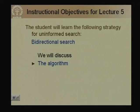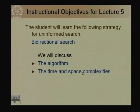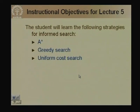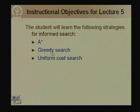In bidirectional search we will discuss the algorithm, the time and space complexities, and then we will move on to informed search. We will talk about the algorithm A* and before that we will talk about greedy search algorithm as well as uniform cost search, which are special cases of A*.